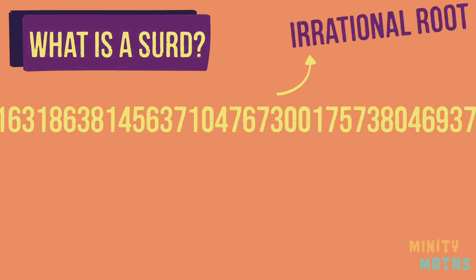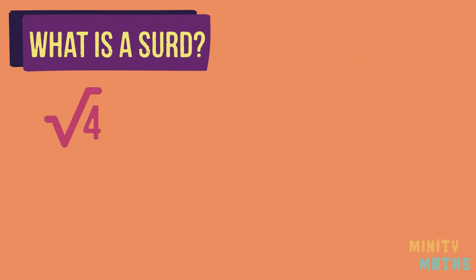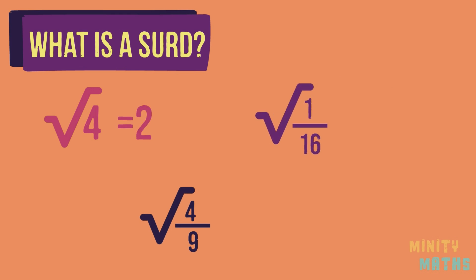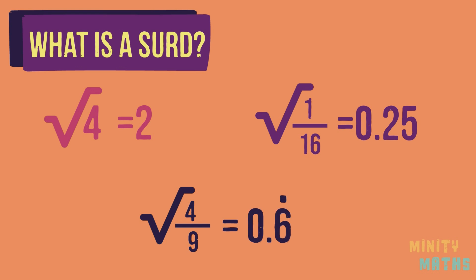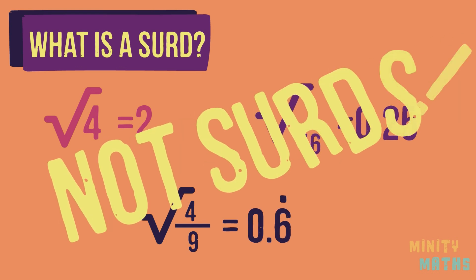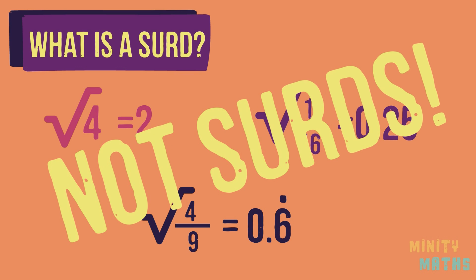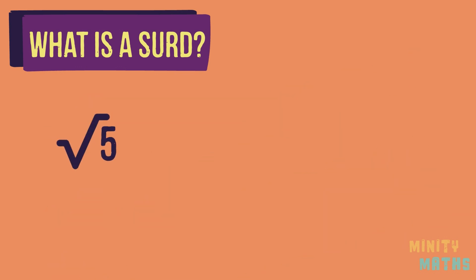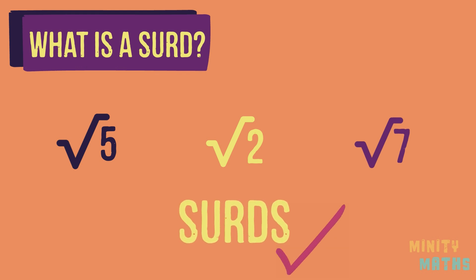So how can we tell if a root is a surd or not? If you can find the exact root of a number whereby it can be written as a whole number, a terminating decimal, or a recurring decimal, then it is not a surd. These are surds, as we end up with never-ending decimal numbers with no repeating pattern. We cannot practically write these exact numbers out, only approximations.